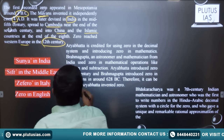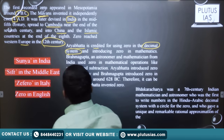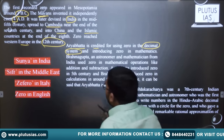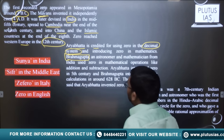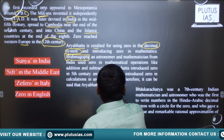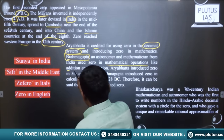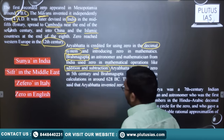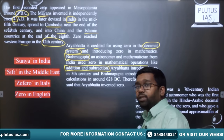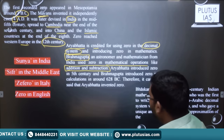The debate on zero is this: Aryabhata is the first person credited for using zero in the decimal system and for introducing zero into mathematics. However, Brahmagupta is the first person who used zero in mathematical operations — specifically addition and subtraction. So Aryabhata introduced zero in the fifth century, while Brahmagupta was the person who especially used zero in calculations.